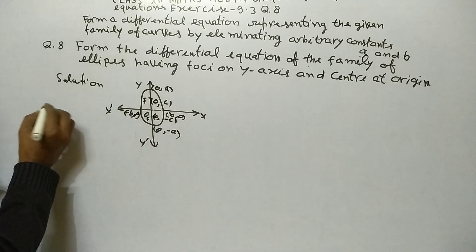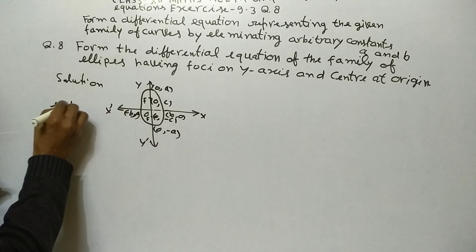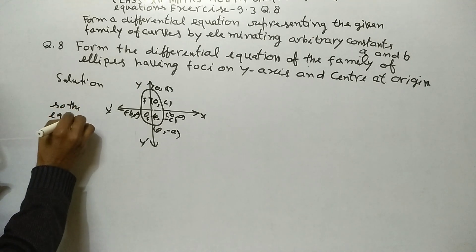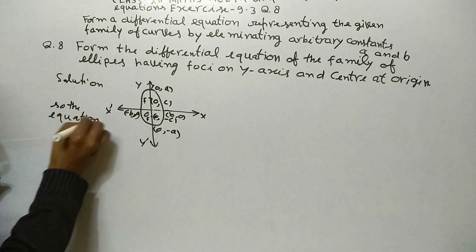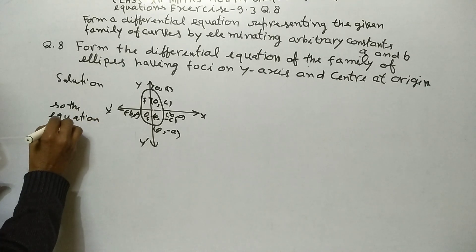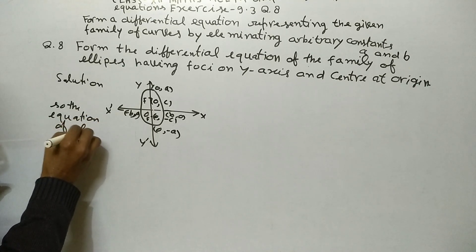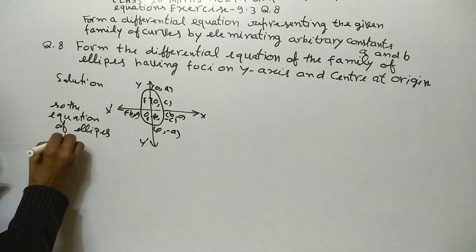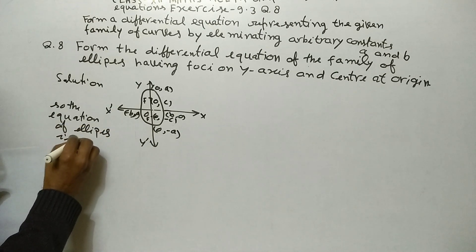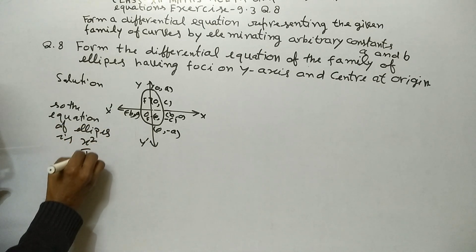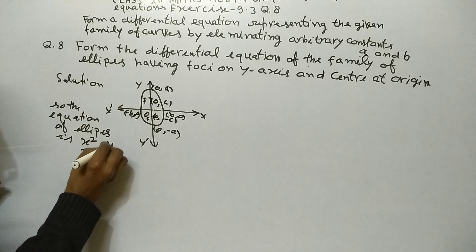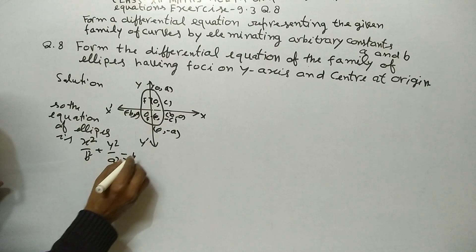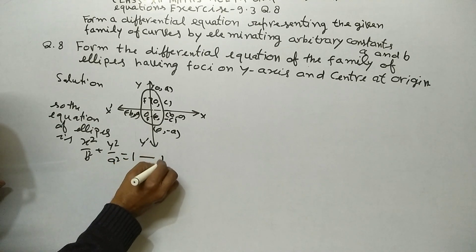So the equation of the ellipse is x² / b² + y² / a² = 1. This is Equation 1.